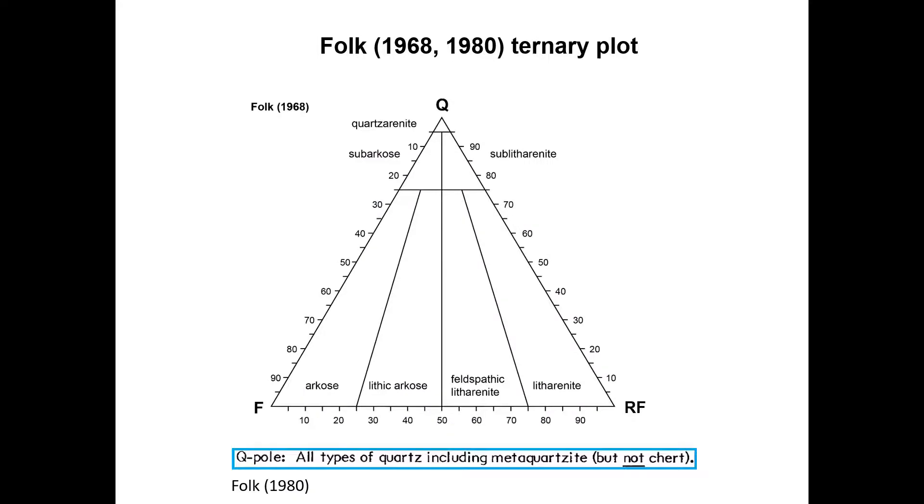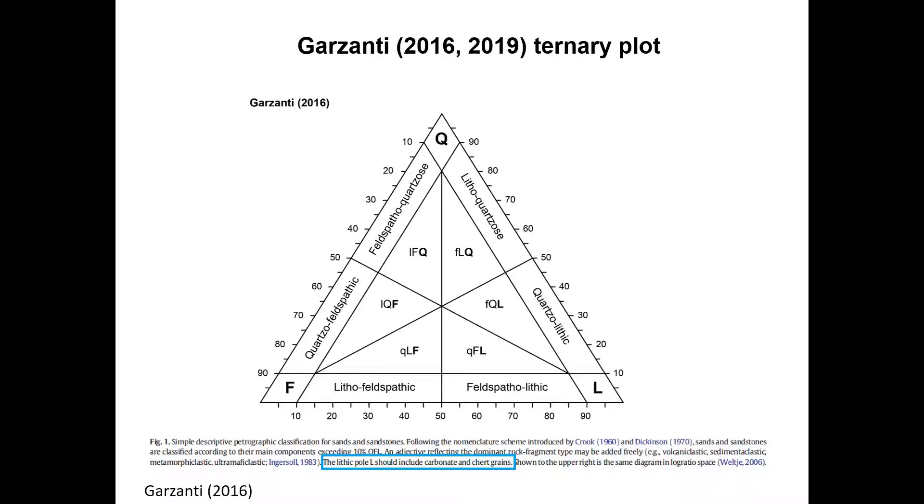In the Folk plot, essentially all polycrystalline quartz grains plot as Q, but not chert, which is considered a rock fragment. Garzanti follows a similar definition. Mono- and polycrystalline quartz are counted as Q; chert is counted as L.